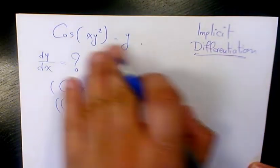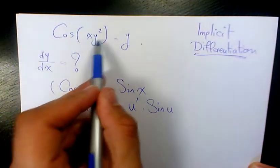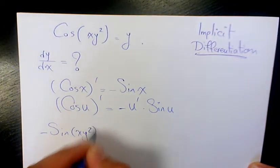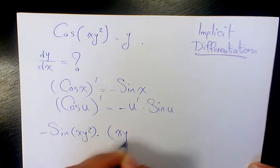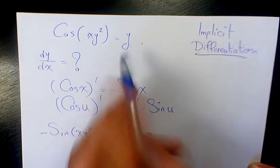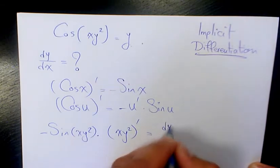So now the derivative of cosine x y squared is going to be negative sine x y squared times x y squared prime equals the derivative of y with respect to x, dy over dx.